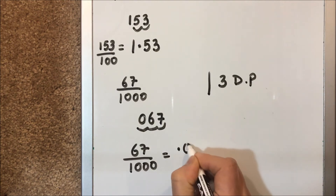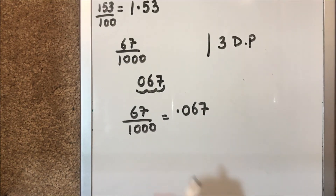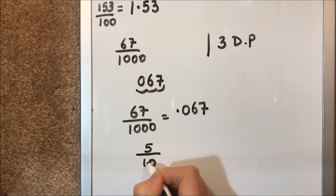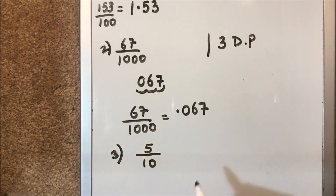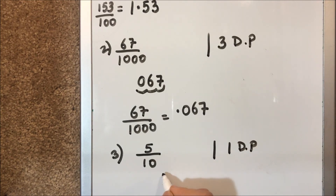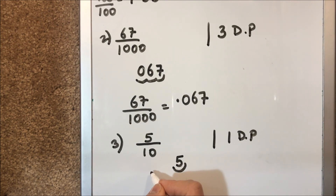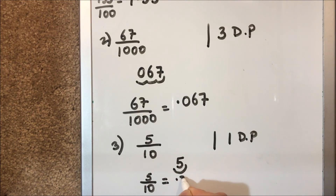Let's have another example: 5 over 10. Here the number of decimal places is one. We write only the numerator, then move one place to the left and put the decimal point. So 5 over 10 is equal to 0.5.